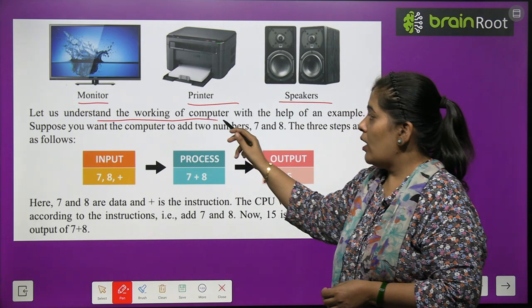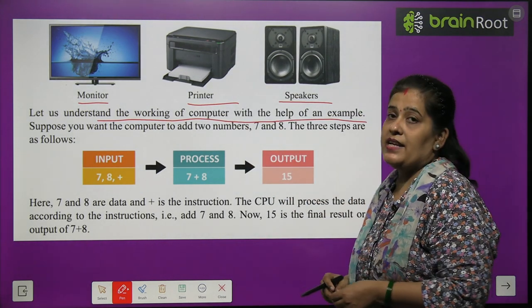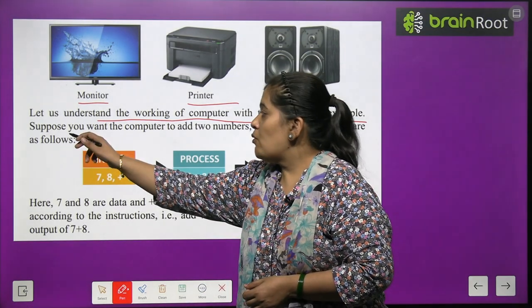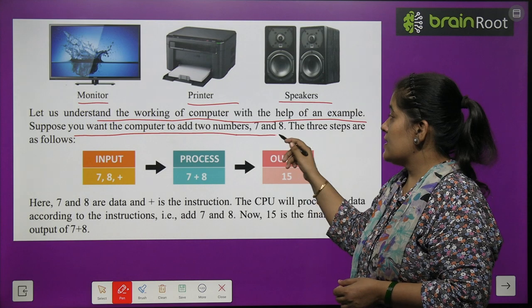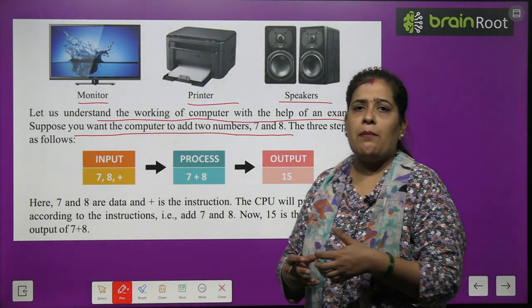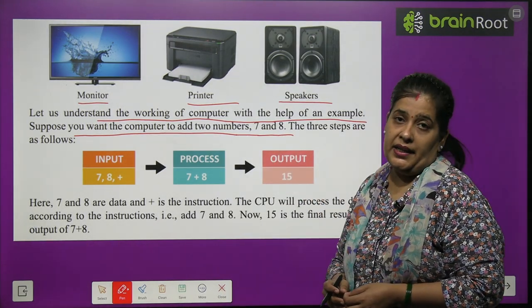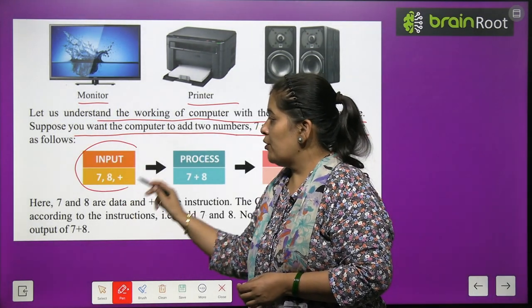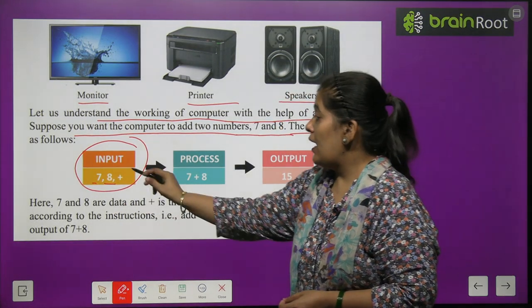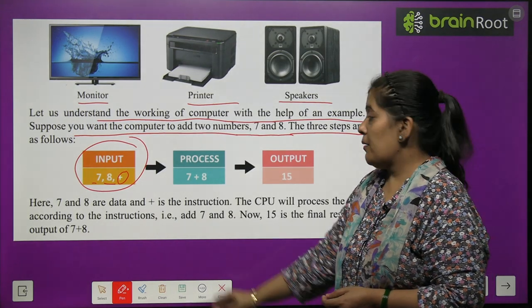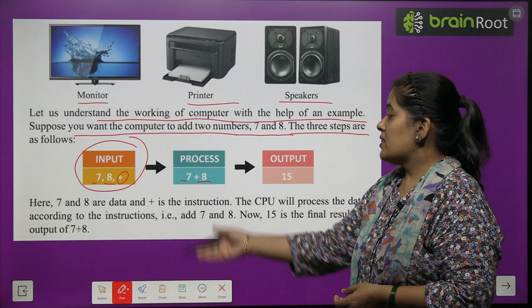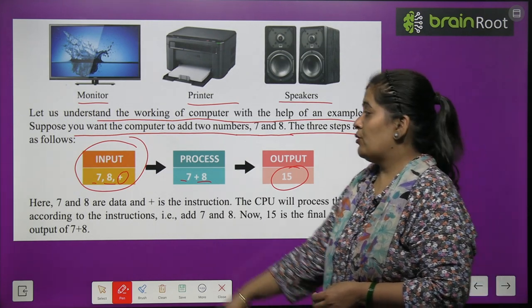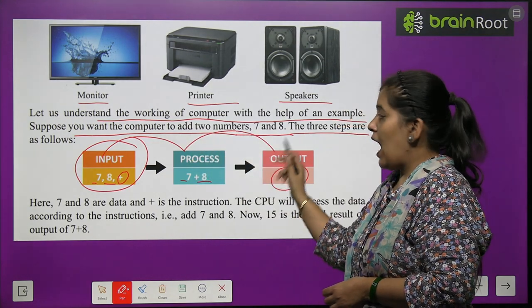Let us understand the working of a computer with the help of an example. Suppose you want the computer to add numbers 7 and 8. The three steps are: Input — 7 and 8; Processing — 7 plus 8; Output — the answer is 15. Input, Process, Output.